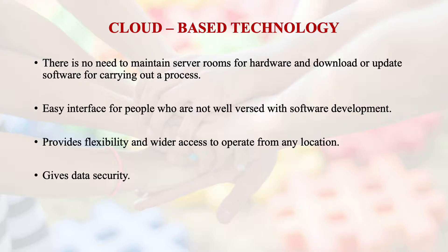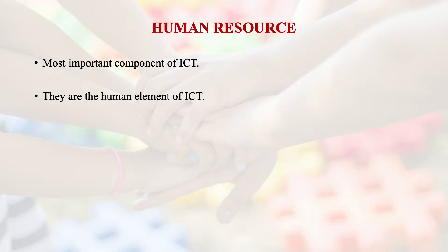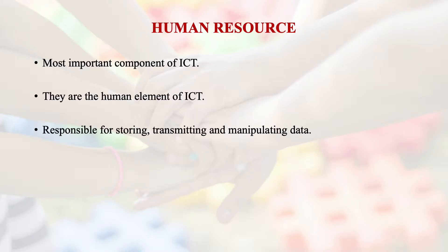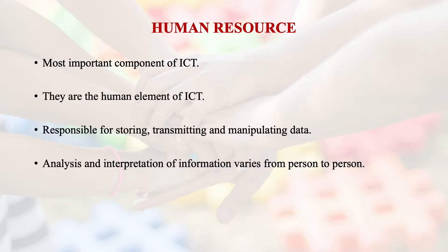Human resources — that means people — are the most important component of ICT. They are the human element of ICT, responsible for storing, transmitting, and manipulating data. The analysis and interpretation of information varies from person to person. When we talk about human resource in the context of NGOs, all NGOs are dependent on their respective human resources. Human resource can be in the form of data entry operators, solutions managers, or people who are operating computers and ICT. A skilled person is required to access the information and disseminate it through a particular kind of technology.